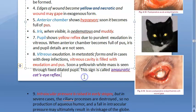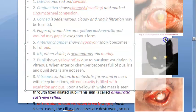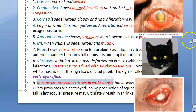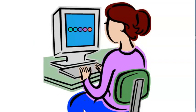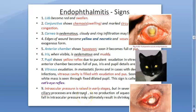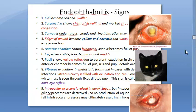Intraocular pressure is usually raised in the early stages of endophthalmitis. Later, it reduces because the ciliary processes are destroyed and stop secreting aqueous humor. In summary, signs include edematous lids, chemotic conjunctiva, circumcorneal congestion, edematous cornea, gaping wound edges, hypopyon, muddy iris, yellow pupillary reflex, amaurotic cat's eye reflex, and initially raised then reduced intraocular pressure.